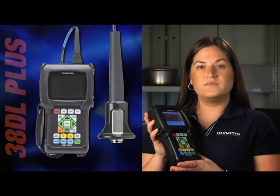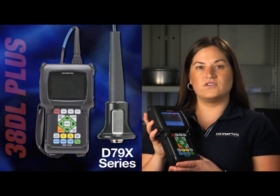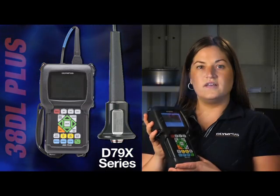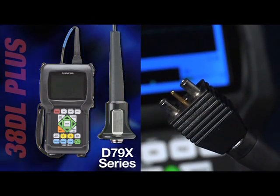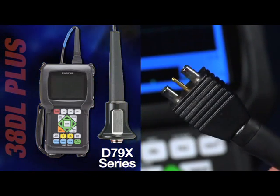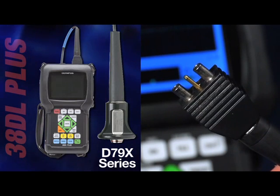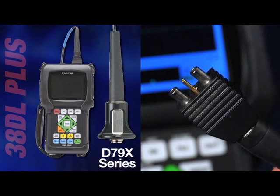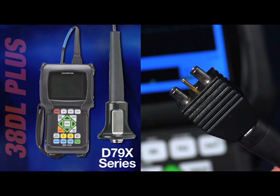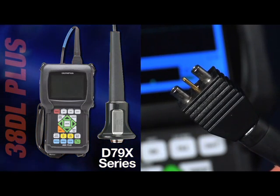Today we are going to discuss how to calibrate the 38DL Plus with a standard D790X series dual element transducer. These transducers have a center pin for probe recognition. Simply plugging them into the 38DL Plus allows the gauge to automatically recognize the transducer and recalls the default parameters for that probe.